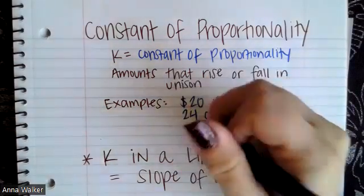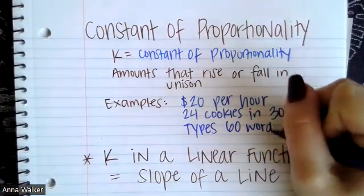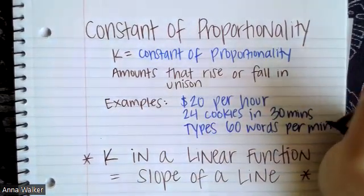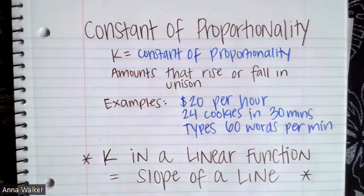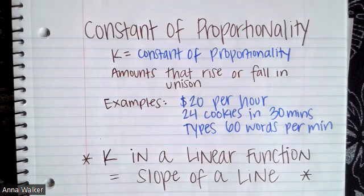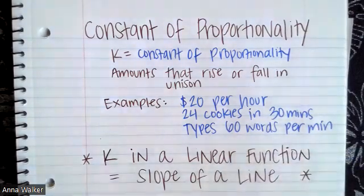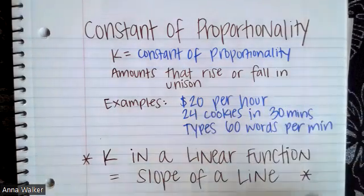And another example is let's say like if someone's typing something, so someone types 60 words per minute, that's considered a constant, right? For every minute they're typing 60 words until their hands get tired. So these are all examples of constants of proportionality. It's basically when we're looking at some sort of relationship and we're trying to figure out what is the pattern? What are we increasing or decreasing by? What is kind of the pattern that's happening for every unit of time, for every hour, for every 30 minutes? Whatever the case may be.